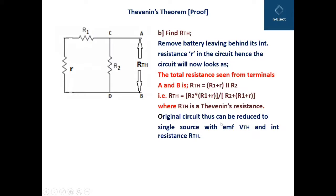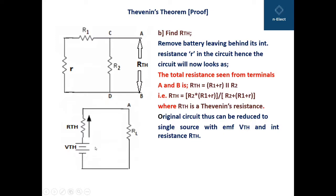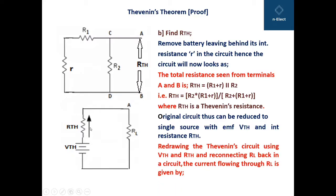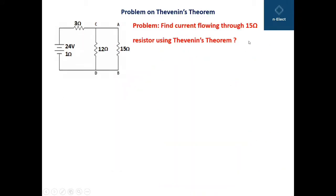The original circuit can be reduced to a single source with EMF VTH and internal resistance RTH. We have calculated VTH and RTH, and reconnecting RL gives the Thevenin's equivalent circuit. The current flowing through RL is IL equals VTH divided by RTH plus RL, and hence the theorem is proved.